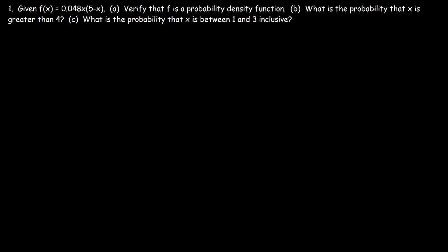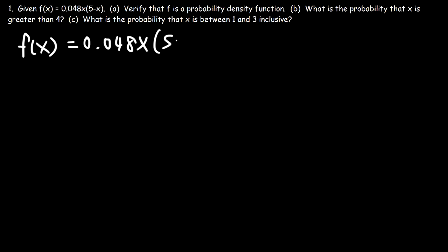In this video we're going to talk about how to solve probability density functions. We're given f of x which is 0.048x times (5 minus x).